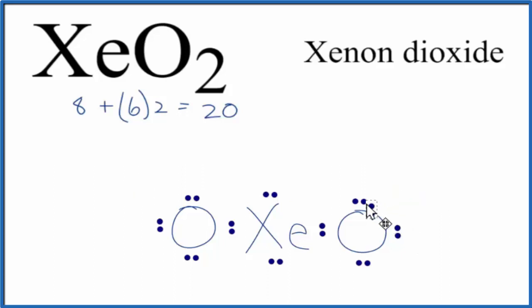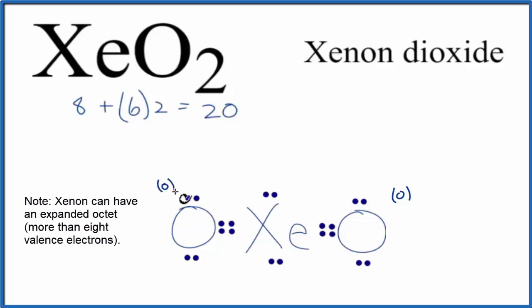If I move this pair of electrons to the center to form a double bond between the Xenon and the Oxygen, then this Oxygen will have a formal charge of zero. So let's move the other pair over. And now it has a formal charge of zero, and the Xenon in the center has a formal charge of zero. So with these formal charges all at zero,